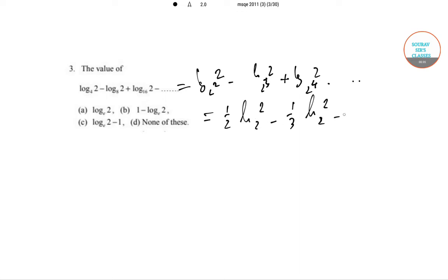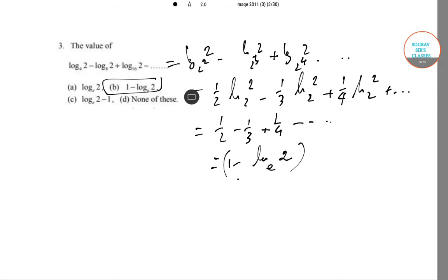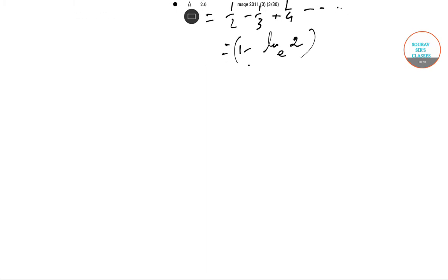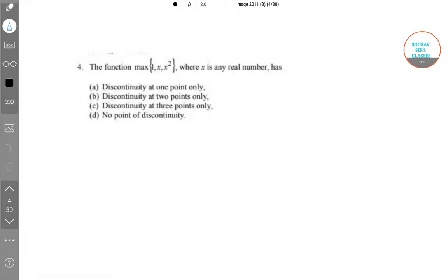So this is one-half log 2 base 2, plus one-third log 2 base 2, plus one-fourth log 2 base 2, and it goes on. So half you can take common and every time it is 1, minus the series of log 2 to the base e. So simply the answer in this case is B. Next question I am proceeding now.